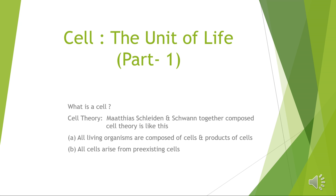The number of cells in a multicellular organism is correlated to the size of the body. For example, a newly born human body has 2 × 10¹² cells, and the number of cells increases with age. A 60 kg adult human being will have 100 trillion cells.